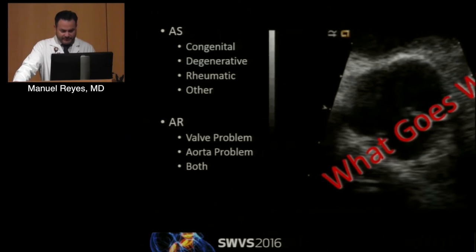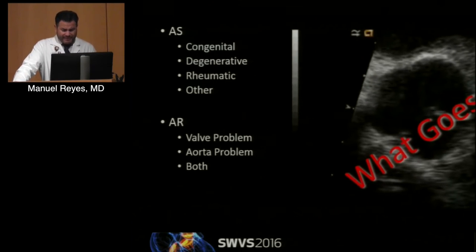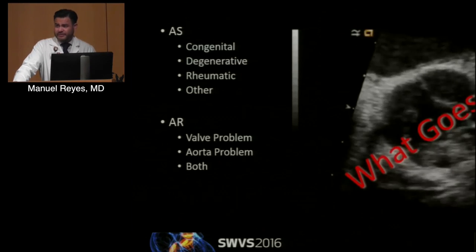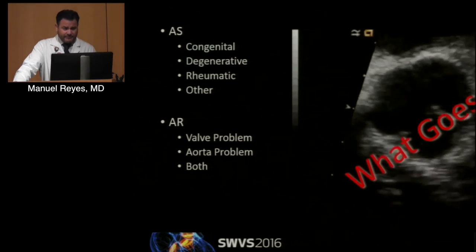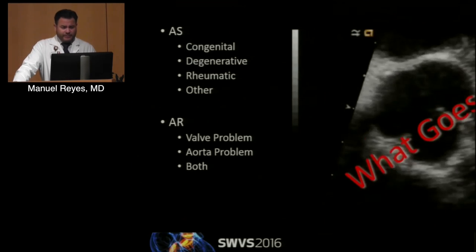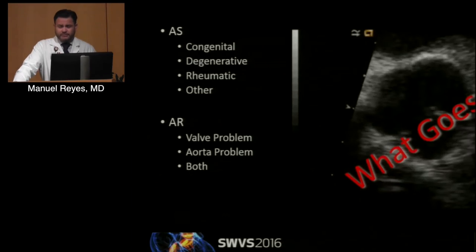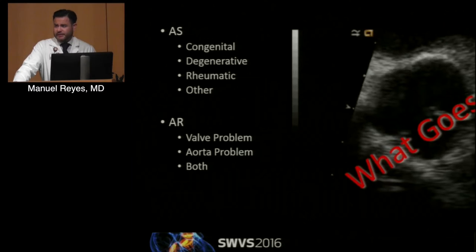So what can go wrong with it specifically? I'm going to break it down into very simplistic terms and keep it to the most common things. For aortic stenosis, we'll talk about what we've heard a little bit about already: congenital changes, degenerative changes, rheumatic changes, and some of the few outlier things that might exist.